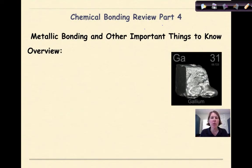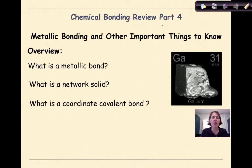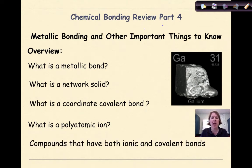Welcome to Chemical Bonding Review Part 4. Today we're going to be looking at the concept of metallic bonding and other important things to know about chemical bonding. We're going to look at what is a metallic bond, what is a network solid, what's a coordinate covalent bond, what is a polyatomic ion and how we relate coordinate covalent bonds to some of them, and compounds that have both ionic and covalent bonds.